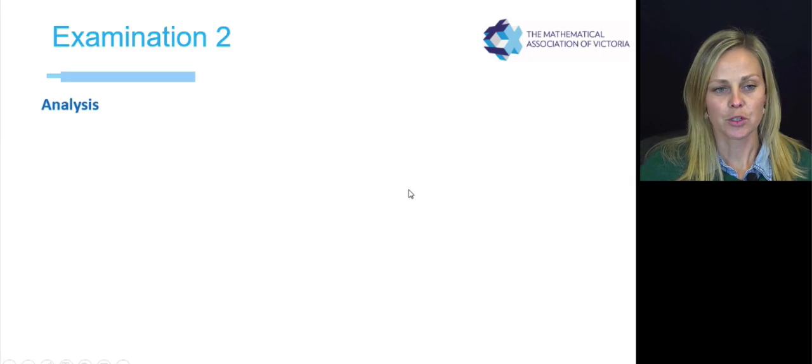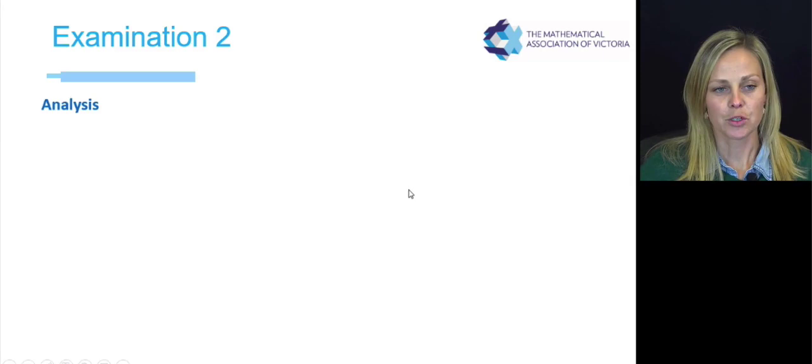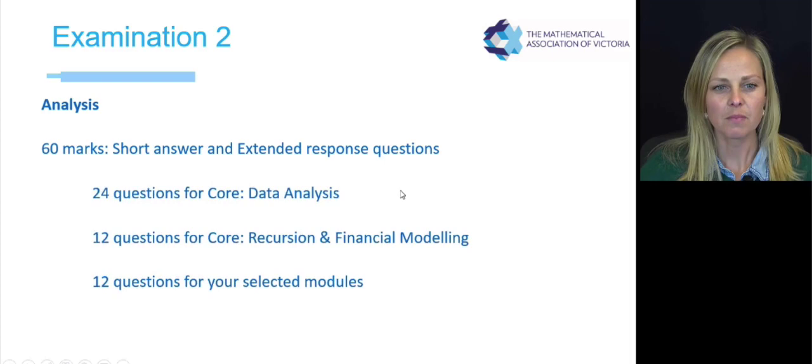So having a look at examination two, this is obviously your short answer paper where you'll have your 60 marks of your short answer questions. You've got your 24 with your data analysis, your 12 questions for recursion and financial, and then you've got your 12 questions for whatever modules you do. So that might be your matrices, your networks, your geometry, or your graphs and relations.